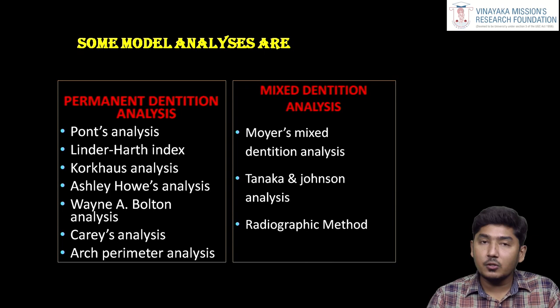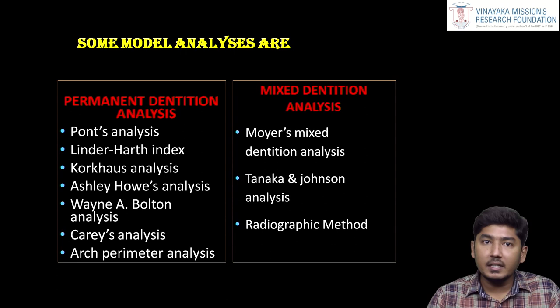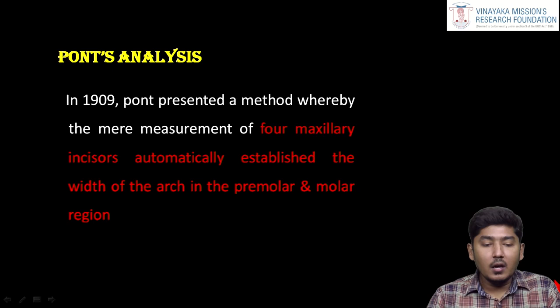In today's lecture, we are going to see the following model analyses, which can be broadly categorized into two: permanent dentition analysis and mixed dentition analysis. In permanent dentition, we will see Pons analysis, Lindroth, Korkov's, Ashley Owe analysis, Bolton analysis, Carey's and Arch perimeter analysis. The first three — Pons, Lindroth, and Korkov's — are done to evaluate whether the patient needs expansion. Ashley Owe evaluates whether the expansion is possible or not. Bolton is the interrelationship between the maxillary and mandibular dentition, and Carey's and Arch perimeter analysis is the tooth size arch length discrepancy. In the mixed dentition analysis, we will see Moyes mixed dentition analysis, Tanaka-Johnson, and radiographic methods.